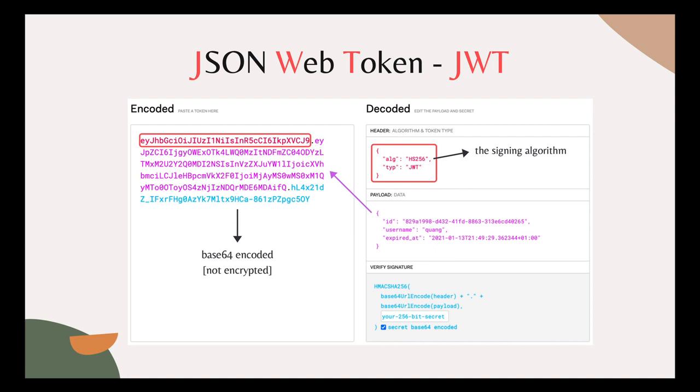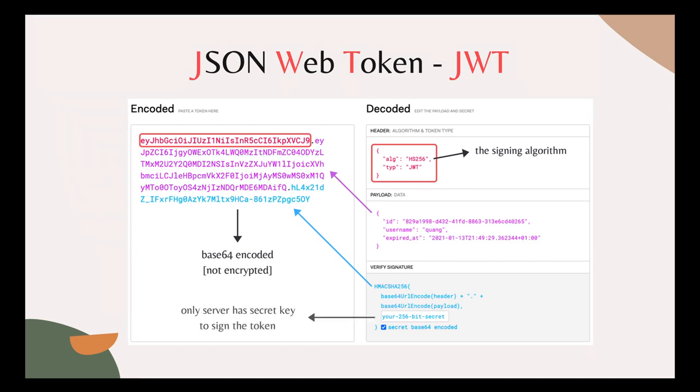So you don't need the secret or private key of the server in order to decode its content. It also means that we can easily encode the header and payload data without the key. So how can the server verify the authenticity of the access token? Well, that's the purpose of the third part of the token — the digital signature in blue. Only the server has a secret or private key to sign the token. So if a hacker attempts to create a fake token without the correct key, it could be easily detected by the server in the verification process.